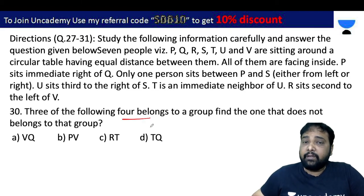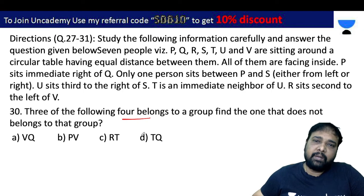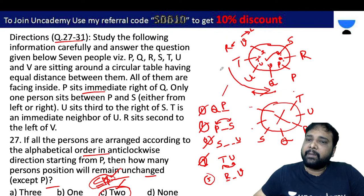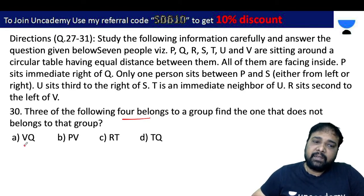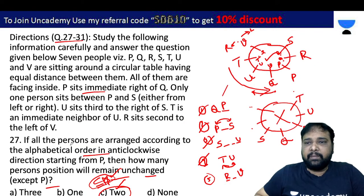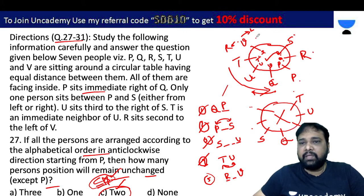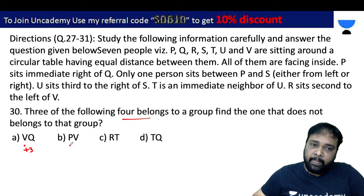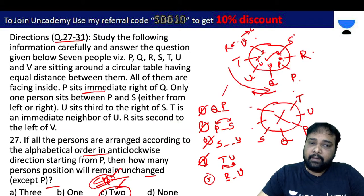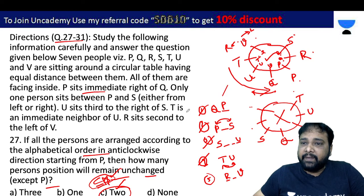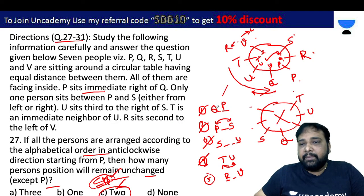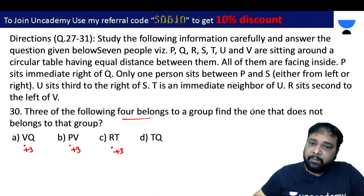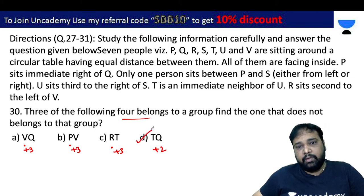Problem number 30: three of the following four are similar and one is different. V and Q — V Q is the third right of Q. P is in the right side of U. T is equal to R in this arrangement. The second position equals 3, so TQ equals 2. That is why the answer is D. Only D is the right answer for problem number 13.